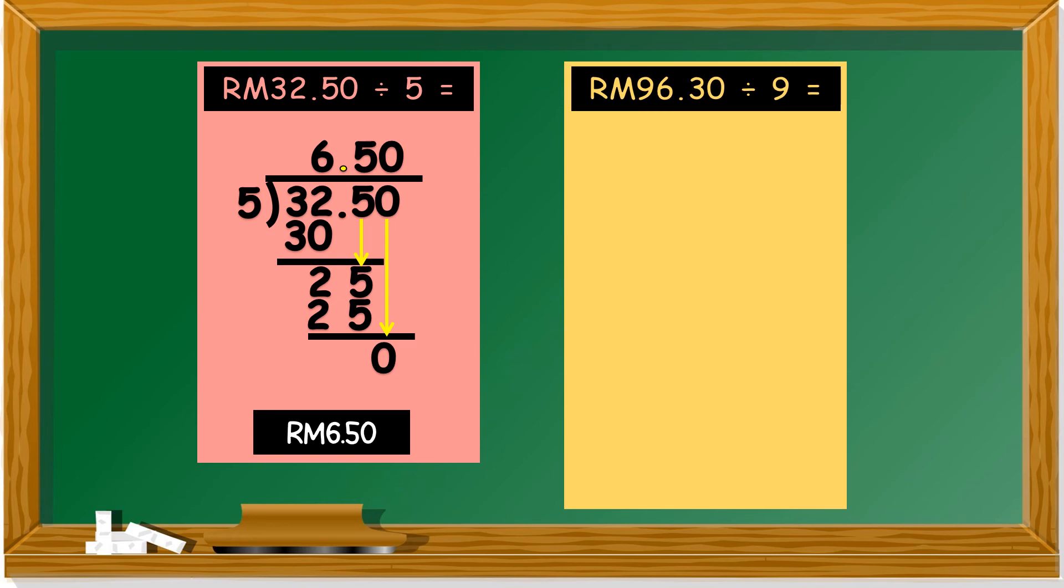Next one. RM96.30 divided by 9. Put it in division form like this. 9 divided by 9 is 1 times 9. We don't have any remainder. So we bring down the next number, 6. Can 6 divided by 9? No, because 6 is smaller. So we bring down another. So it's 0. We bring down another number, 3. 63.